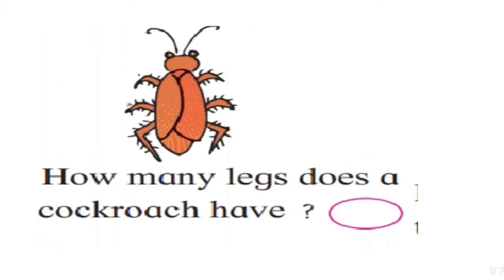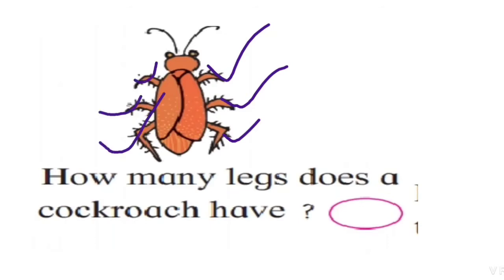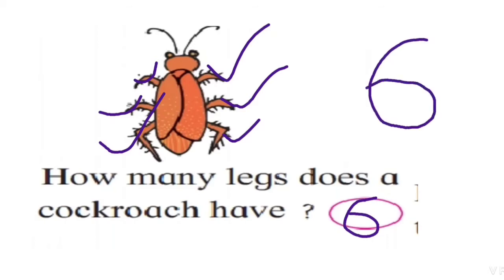Look at this picture — what is this? This is a cockroach. How many legs does a cockroach have? Let's count: one, two, three, four, five, and six. A cockroach has six legs. Make six like this. Very good.